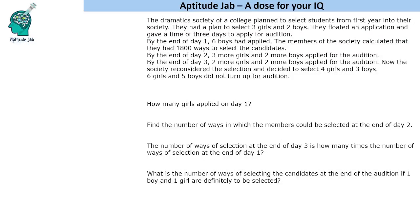Hello everyone, welcome to AptitudeJab. This is a caselet which is based on combinations. It says that there is a dramatic society in a college that plans to select 3 girls and 2 boys into the society.